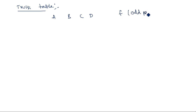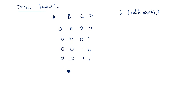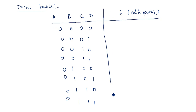The output f is the odd parity bit. The truth table has inputs 0000, 0001, 0010, 0011, and so on. In the first case, the number of ones is zero — which is even — so the parity bit is one. In the next case, the total number of ones is one, which is already odd, so the parity bit is zero.